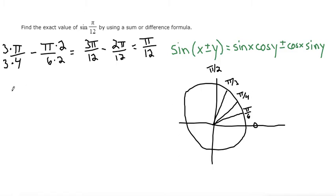So that means that we can write sine of pi over 12, we can rewrite that as sine of pi over four minus pi over six. Cool. So using our formula, that means that pi over four is x, and pi over six is y, and we're using the minus option.